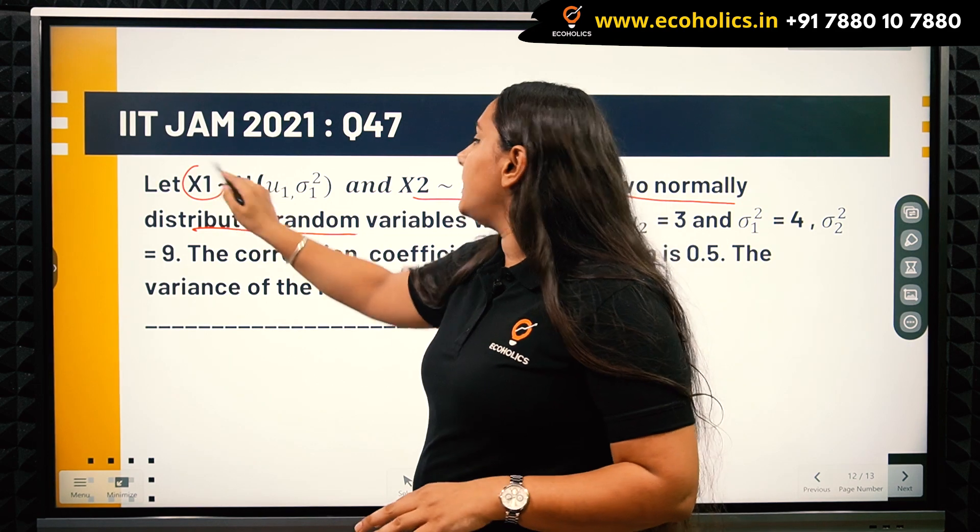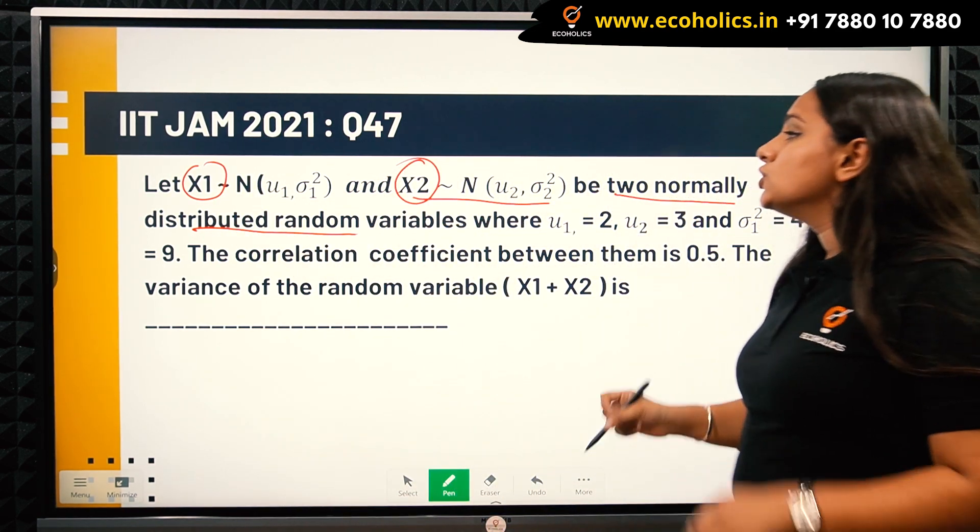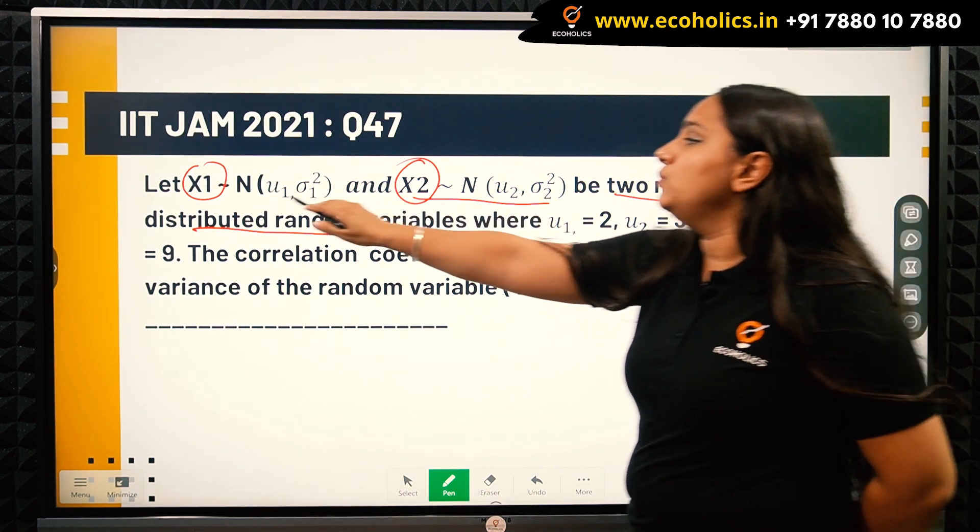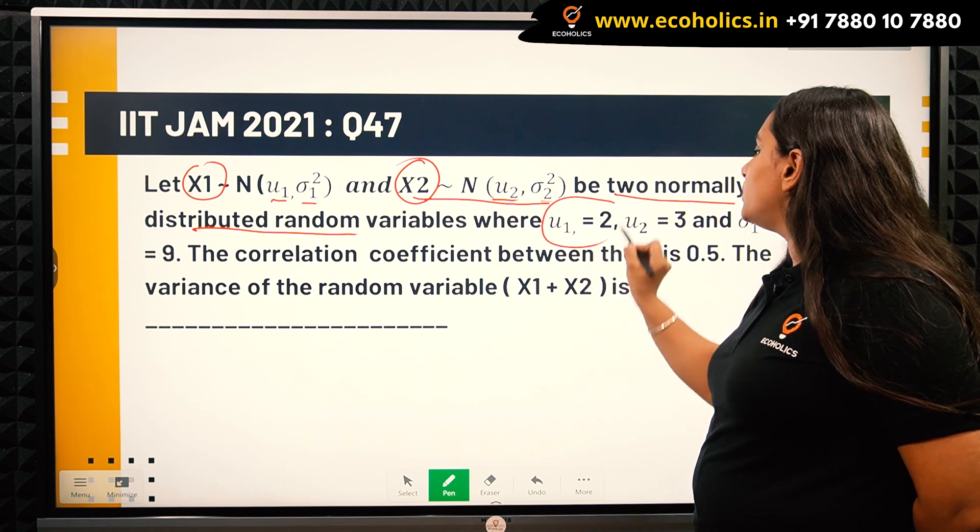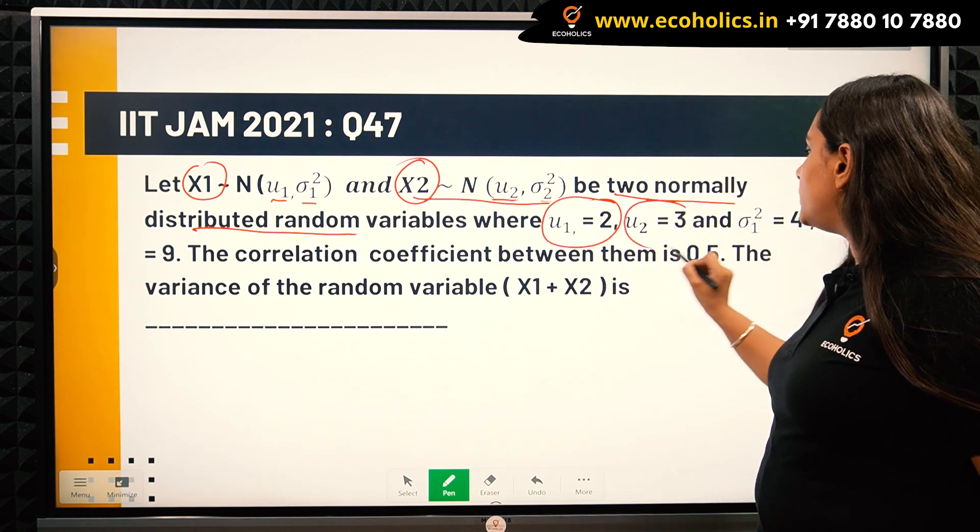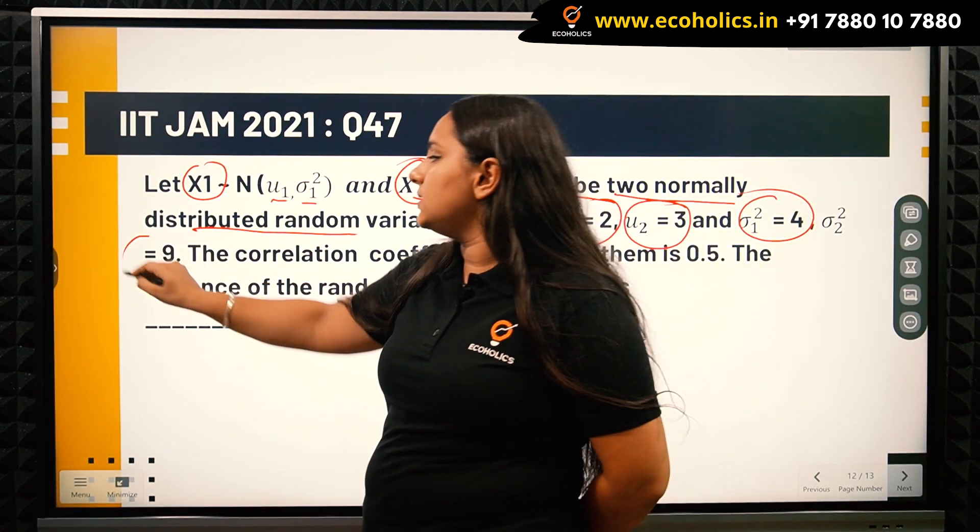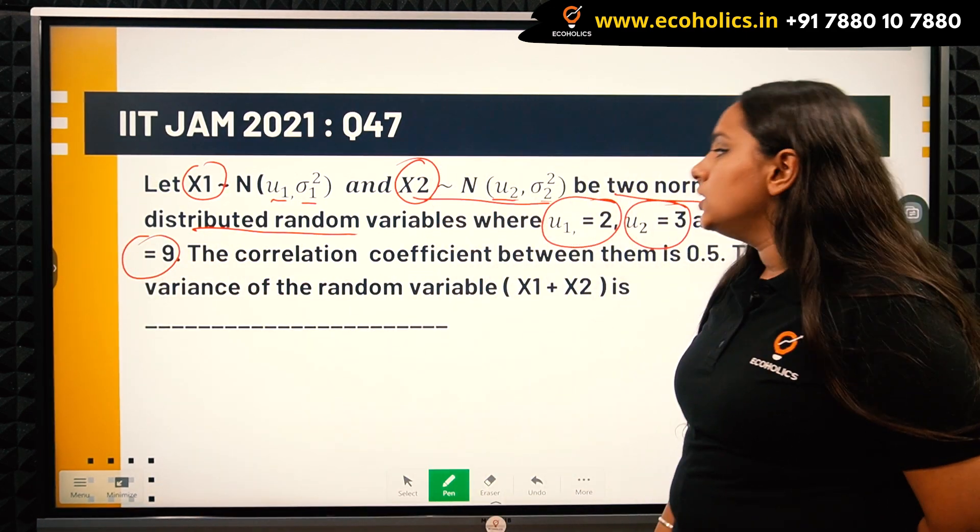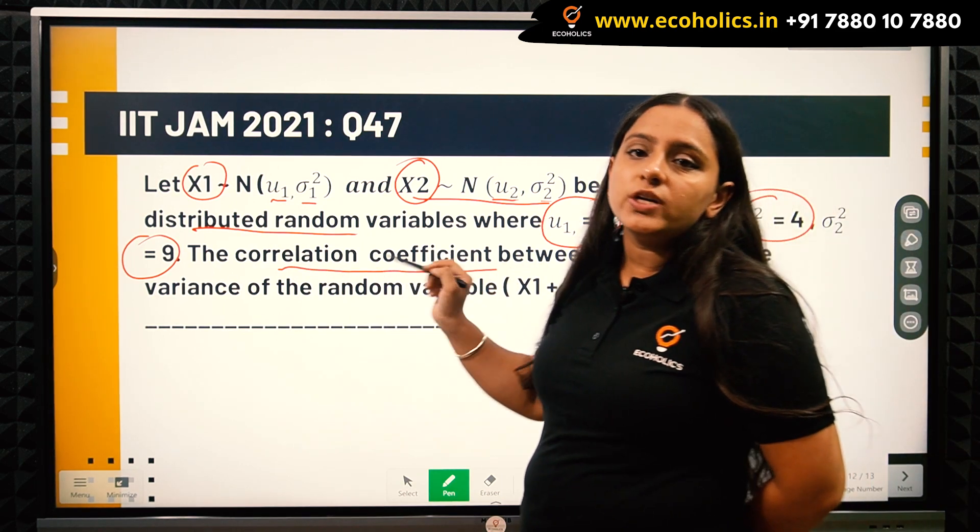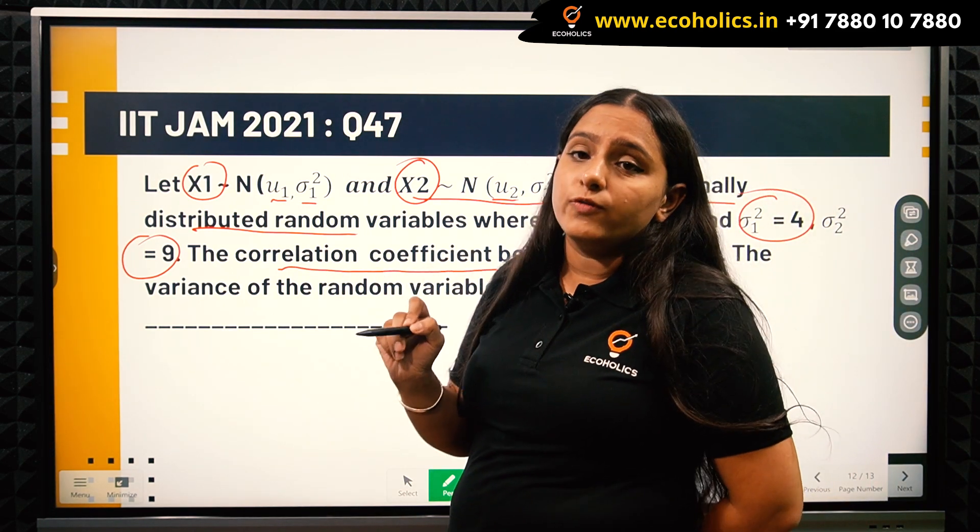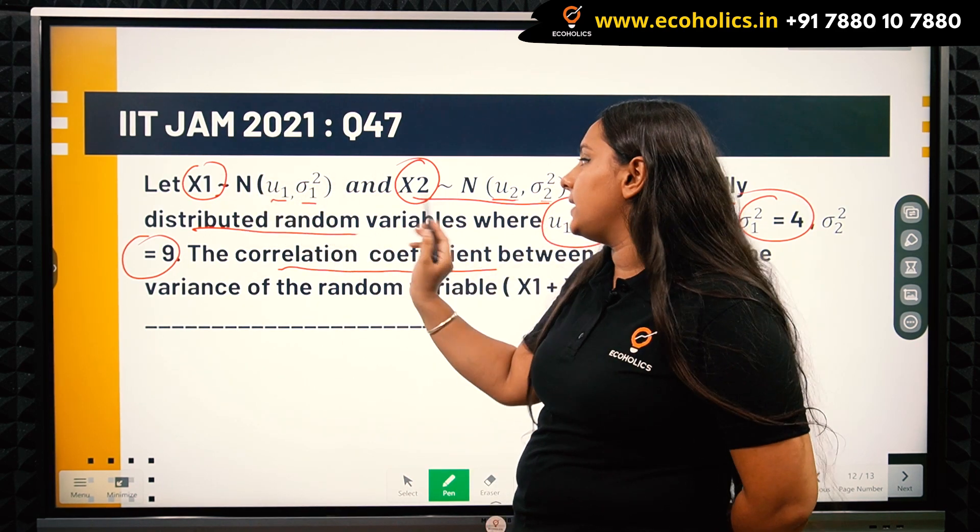So X1 and X2 are two normally distributed random variables. They have given us the values: mu1 equals 2, mu2 equals 3, sigma1 squared is 4, and sigma2 squared is 9. The correlation coefficient, which tells the strength of correlation between the two variables X1 and X2, is 0.5.